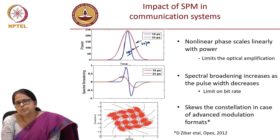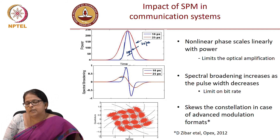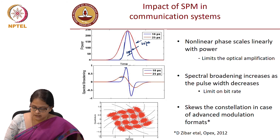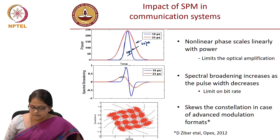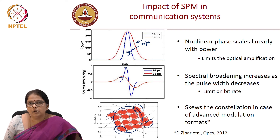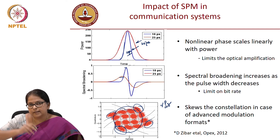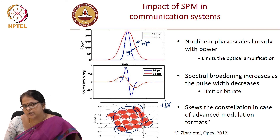What does SPM do to phase-modulated data? Spectral broadening is a function of dI/dt, but the instantaneous phase is a function of power. So a nonlinear phase γ·P·z is added, resulting in phase rotation in the constellation. This phase rotation is larger for the outer constellation points simply because they carry larger power — and when power is large, the nonlinear phase is larger. This skews the constellation, making it very hard to recover the data.